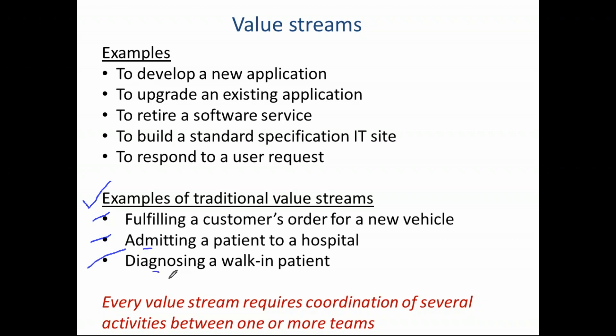Diagnosing a walk-in patient is a different value stream from admitting a patient. There may be several departments involved — in the car dealership example, several people process the customer's request, each with their own procedures: a test drive procedure, a form with insurance requirements, a payment procedure, and a shipping procedure. While each has their own process steps, the value stream is not completed until all of them collaborate together. That's how we understand how a value stream works within an organization — particularly a service provider — to create a new service and to support a new service.